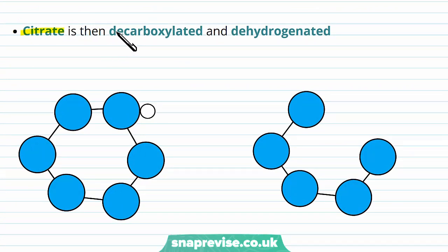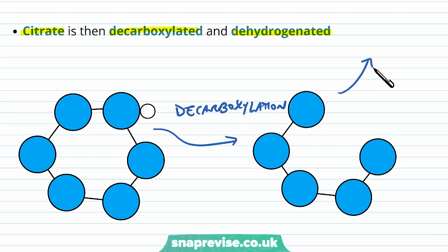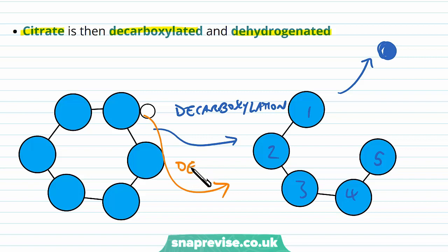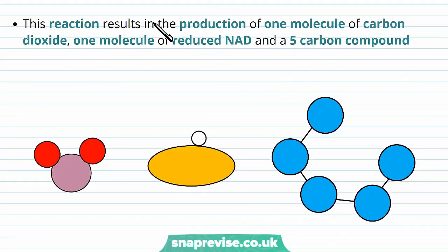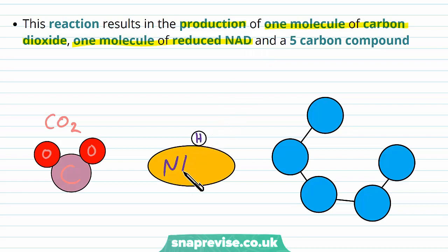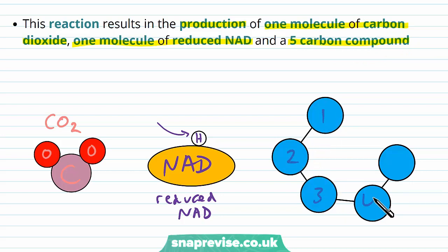Once we've made the citrate, it's then decarboxylated and dehydrogenated. In decarboxylation, we remove a carbon, so one of the six carbons is taken away, leaving us with five carbons. In dehydrogenation, a hydrogen group is lost and taken away by a coenzyme. This reaction results in the production of one molecule of carbon dioxide from the decarboxylation, and one molecule of reduced NAD — the coenzyme takes the hydrogen and carries it away. We end up with a remaining five-carbon compound, which we just call a 5C compound.